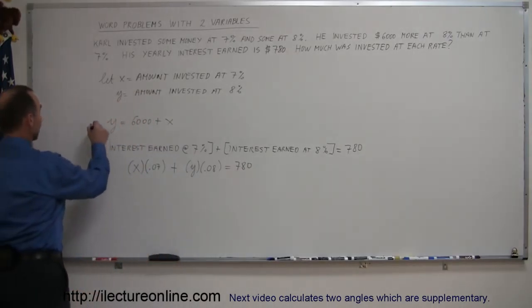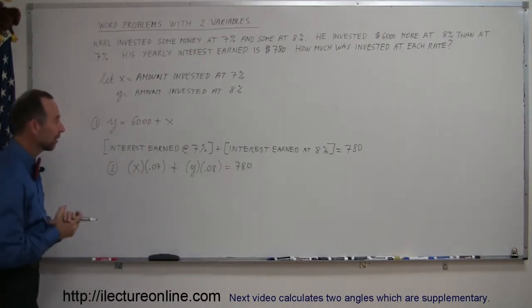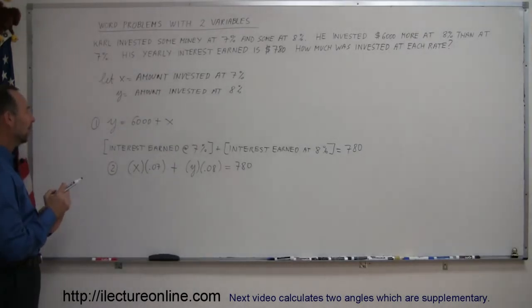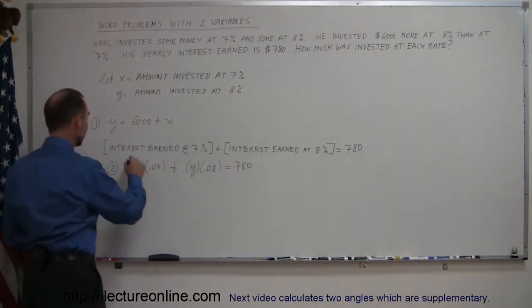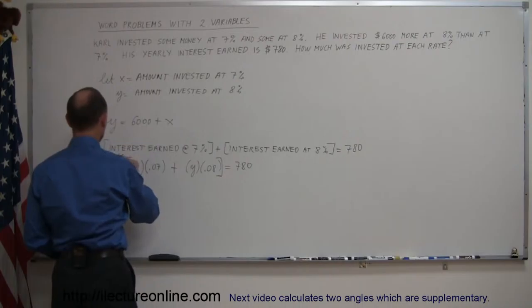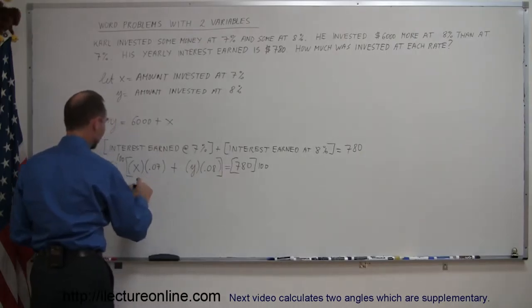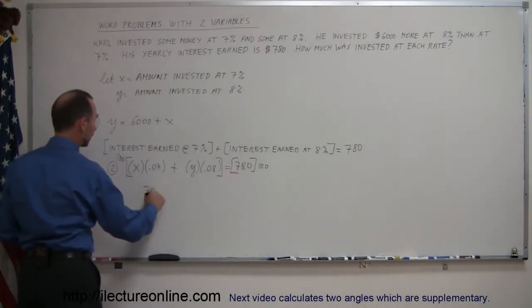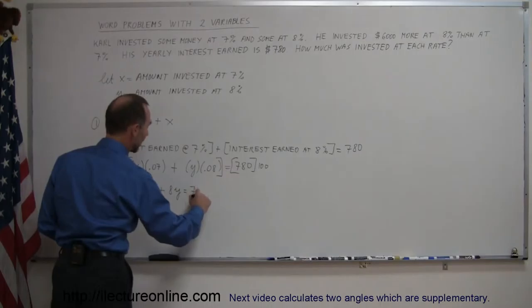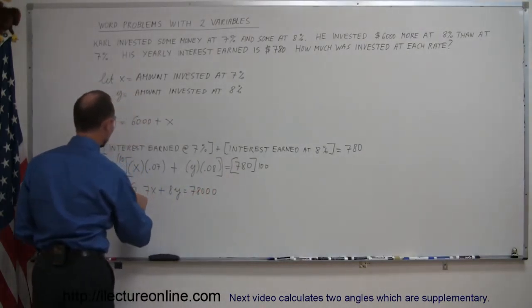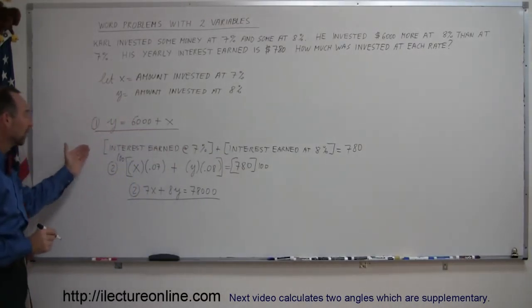Now I have two equations. Before working with equation two, I want to get rid of the decimal places by multiplying both sides by 100. So 100 times 0.07 is 7, giving us 7x; and 100 times 0.08 is 8, giving us 8y; and 780 times 100 is 78,000. So equation two becomes: 7x plus 8y equals 78,000.